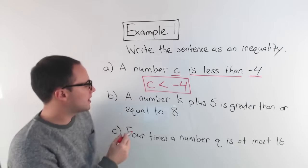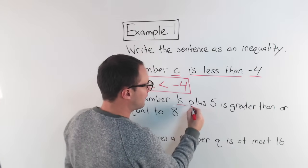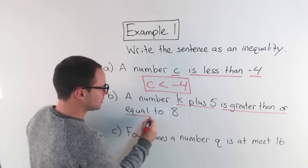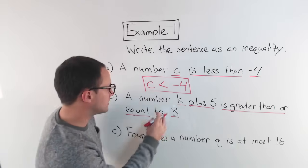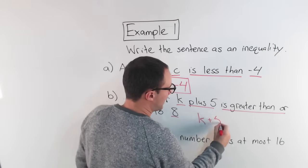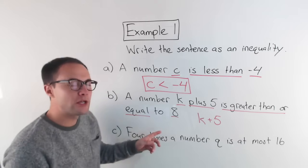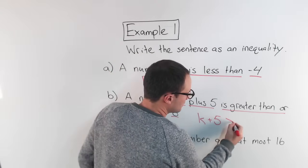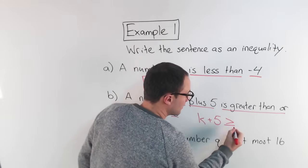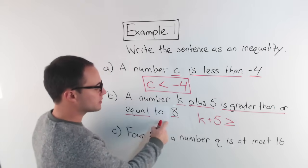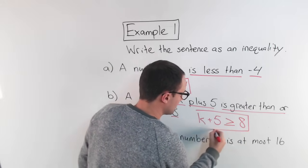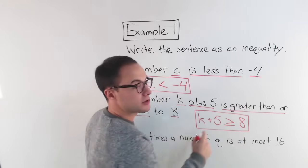Let's look at the next one, B. A number K plus 5 is greater than or equal to 8. So we've got K plus 5 — the plus means we're adding 5. Now, greater than or equal to: greater than would be that symbol, but because it says 'or equal to' we have to have the line underneath. So K plus 5 is greater than or equal to 8.